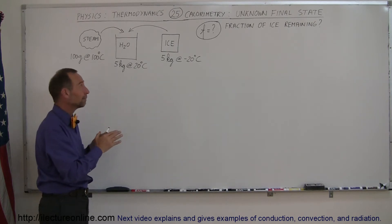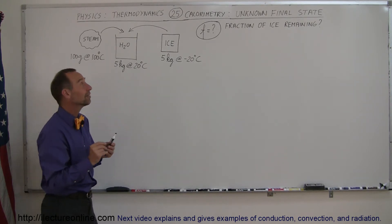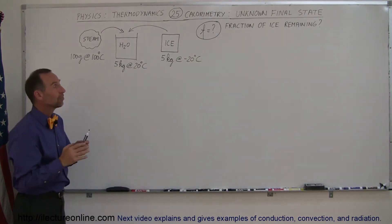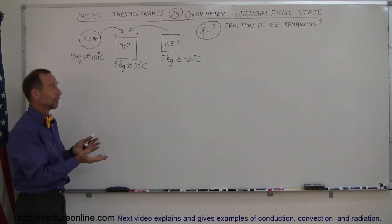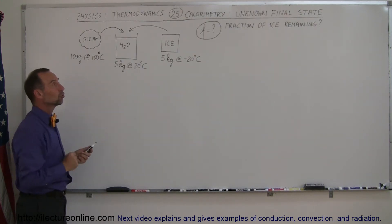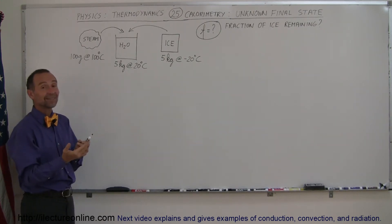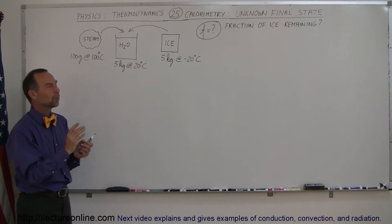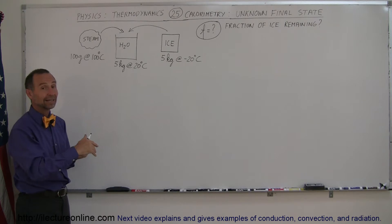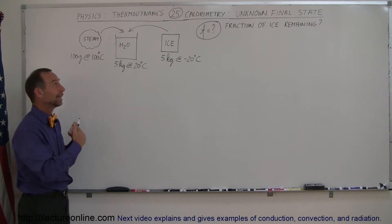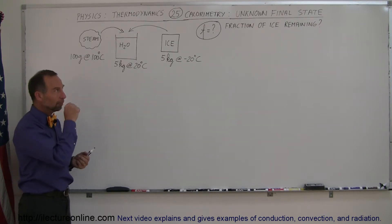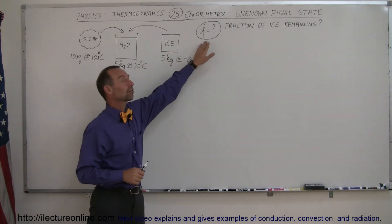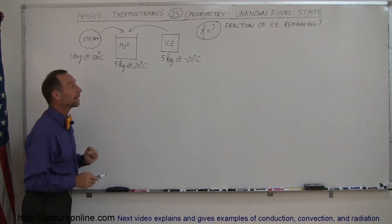It could also be that all the ice melted and the final temperature is somewhere between 0 and 20 degrees centigrade. If that's the case and we're looking for f, we'll get a value that's not between 0 and 1. We'd expect f between 0 and 1, so if our assumption is wrong we might get a negative value or a value greater than 1. If we did, we'd know the assumption was wrong and would need to redo the problem. But I think our assumption is correct, so let's work it out.